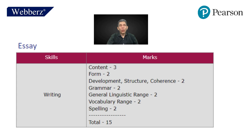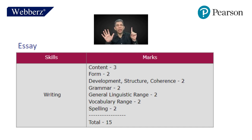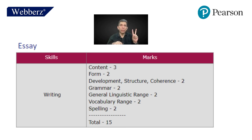First of all, what is checked in an essay? The skills of writing are assessed only in the writing module — not in any other module. There are seven parts: content, form, development structure and coherence, grammar, general linguistic range, vocabulary range, and spelling. All of them are worth two marks each, except content, which is worth three marks. The total comes out to be 15.